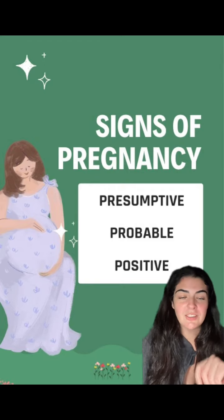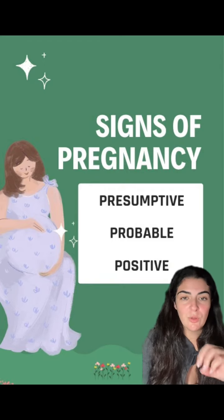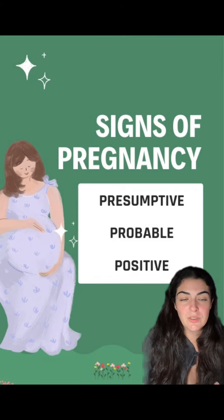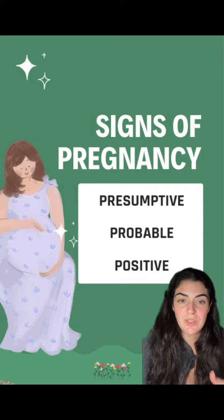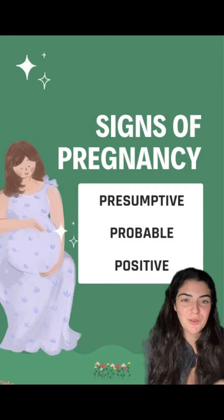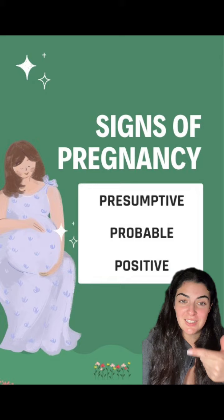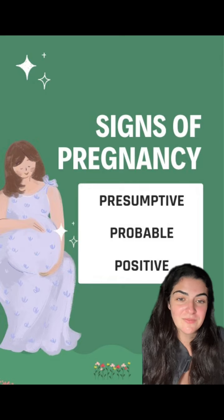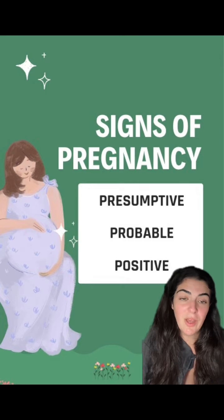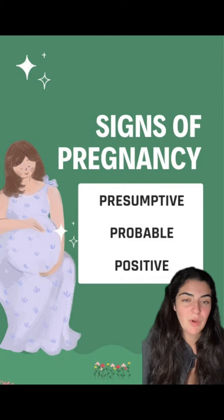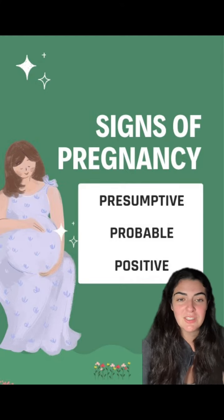Now probable signs of pregnancy are objective. The 'OB' from probable helps you remember objective. Examples of probable signs — things we can see on physical exam — include the Chadwick sign, the Goodell sign, and the Hegar sign. A positive pregnancy test or any changes to skin pigmentation may also fall into the probable sign category because you can objectively see that.